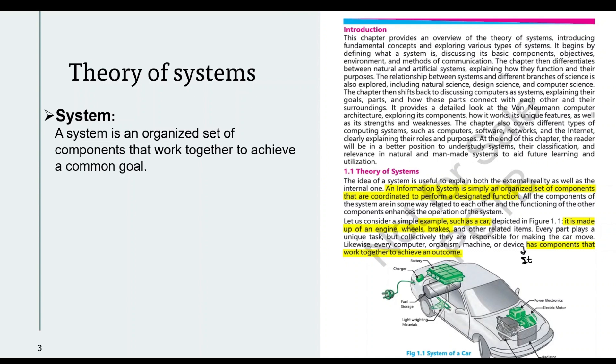This means that a system is not just one thing, but many things or components. Components means parts - there are many parts which are connected in an organized way. They interact with each other, and then they perform a specific task or work.